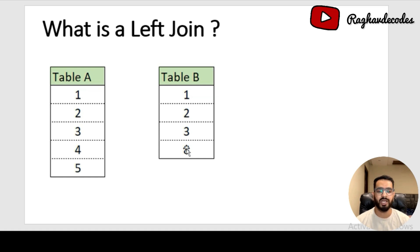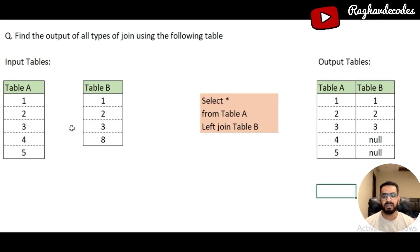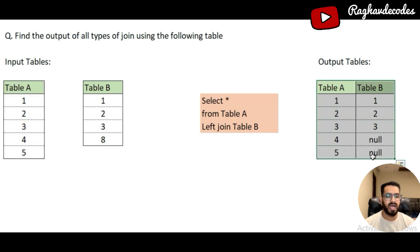The first question is to find out the output of a left join. Before jumping into the solution, let's understand what a left join is. In a left join, the result includes all records of the left table and only the matching records of the right table. Here you can see we have Table A and Table B, and we have an output table where we'll perform the left join.